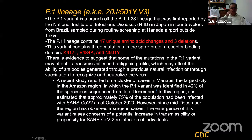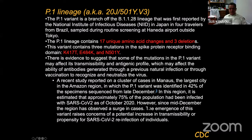The P1 lineage has 17 unique amino acids and three deletions. A recent study reported a cluster of these cases in Manaus, the largest city in the Amazon region, where approximately 75% of the population had been infected with SARS-CoV-2 as of October 2020. This high level of infectivity likely led to this variant being selected much more quickly. The emergence of this variant raises substantial concerns about potential increases in transmissibility or propensity for SARS-CoV-2 reinfection due to the plethora of mutations and deletions across the genome.